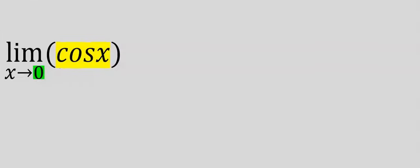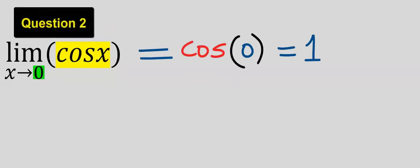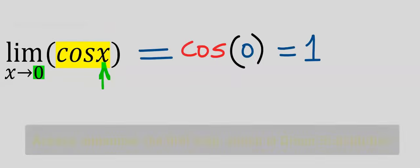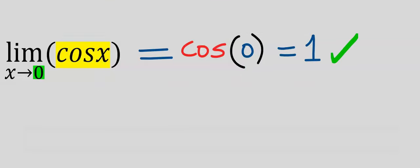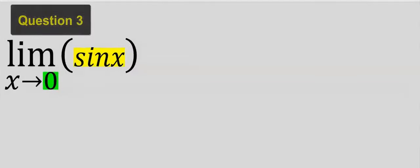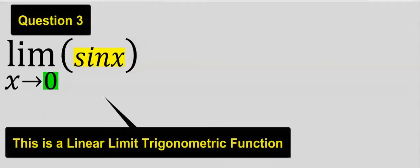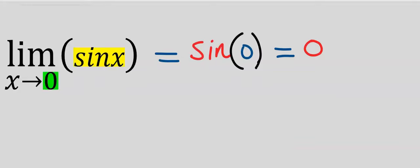Next, consider the limit of cos x as x tends to 0. Putting 0 in place of x, cos 0 is 1. We got an answer, hence we do not need L'Hôpital's rule. Next, consider the limit of sin x as x tends to 0. Sin 0 is 0, which is an answer, so we do not need L'Hôpital's rule.